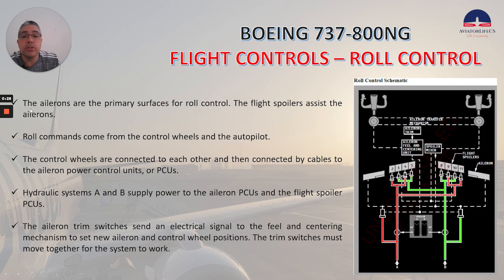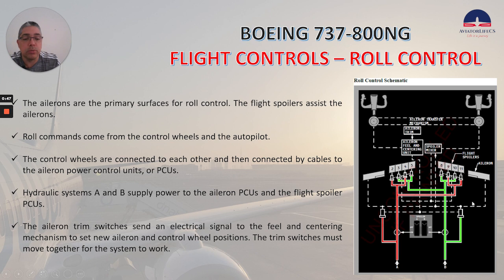The ailerons are the primary surfaces for roll control. The flight spoilers assist the ailerons. Roll commands come from the control wheels and the autopilot. The control wheels are connected to each other and then connected by cables to the aileron power control units or PCUs, which you can see here. Hydraulic systems A and B supply power to the aileron PCUs and the flight spoiler PCUs.